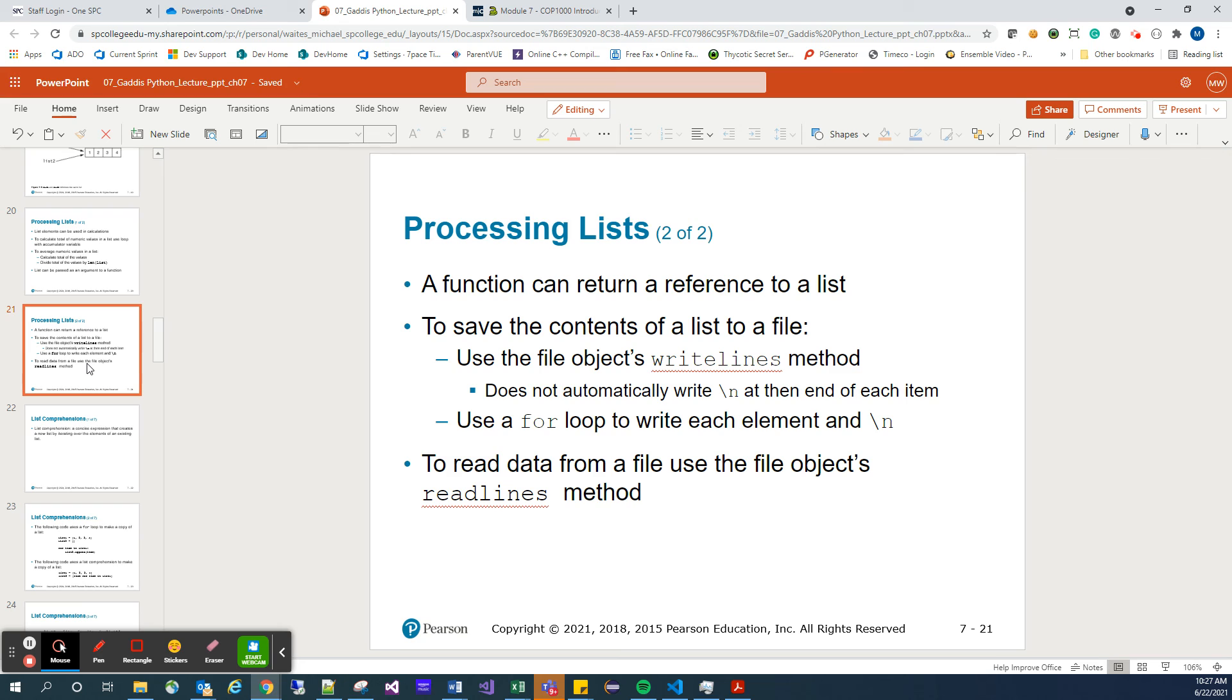To save the contents of a list to a file, we're going to use the writeLines method, and we don't need to automatically write the end character, the new line character, for each item. Or we can use a for loop to write each element, and then we do have to include the new line. And then to read data from a file, we can use the file object's readLines method.